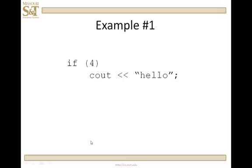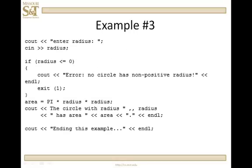Example one: if (4) cout hello. For is an expression — in this case a non-zero number, which evaluates to true. So cout hello will always be executed. This is actually a foolish statement because four is never going to change; there's no real decision to make. On the other hand, if I say if (0) cout hello, zero is synonymous with false, and the cout statement will never get executed.